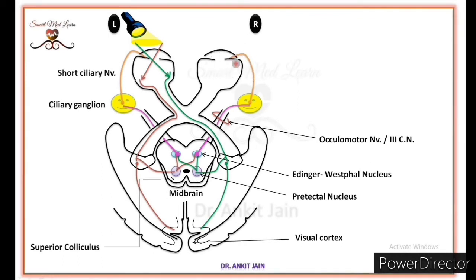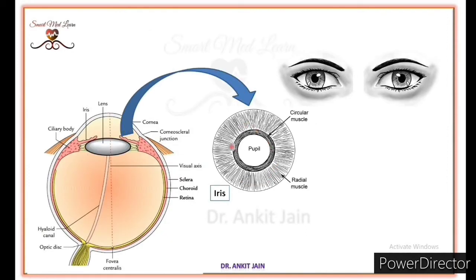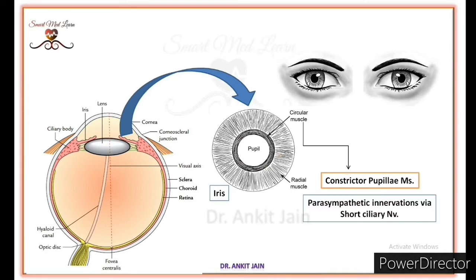Now let us understand what happens with contraction of the constrictor pupillary muscles. First we look at the structure of the iris. The iris consists of outer radial muscles and inner circular muscles. These circular muscles are also known as the constrictor pupillary muscles. Stimulation of the constrictor pupillary muscles leads to constriction of the pupil.